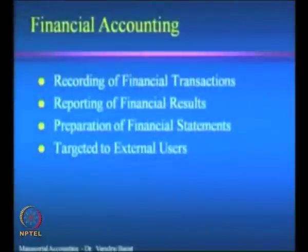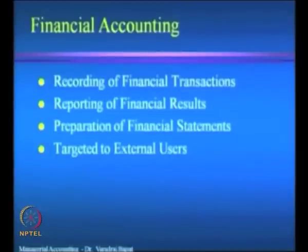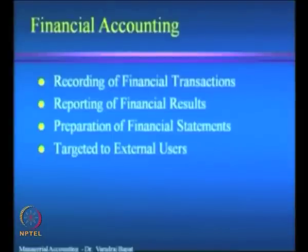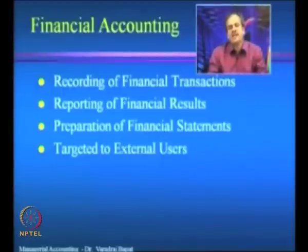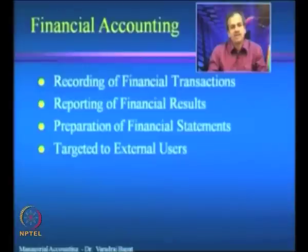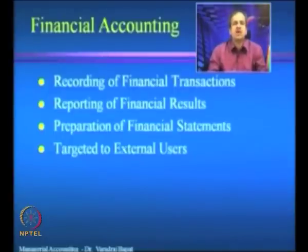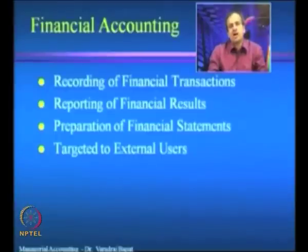The first one is financial accounting. Financial accounting starts with the recording of financial transactions. Once the financial transaction is recorded, the second job of financial accounting is to prepare financial statements, which will lead to reporting of financial results. The targeted users are mainly external users. There are a variety of stakeholders — they could include owners, lenders, employees, government, and regulators. All stakeholders demand that financial statements are prepared properly and financial results are presented in an objective and fair manner. That is the main role of the financial accounting function.